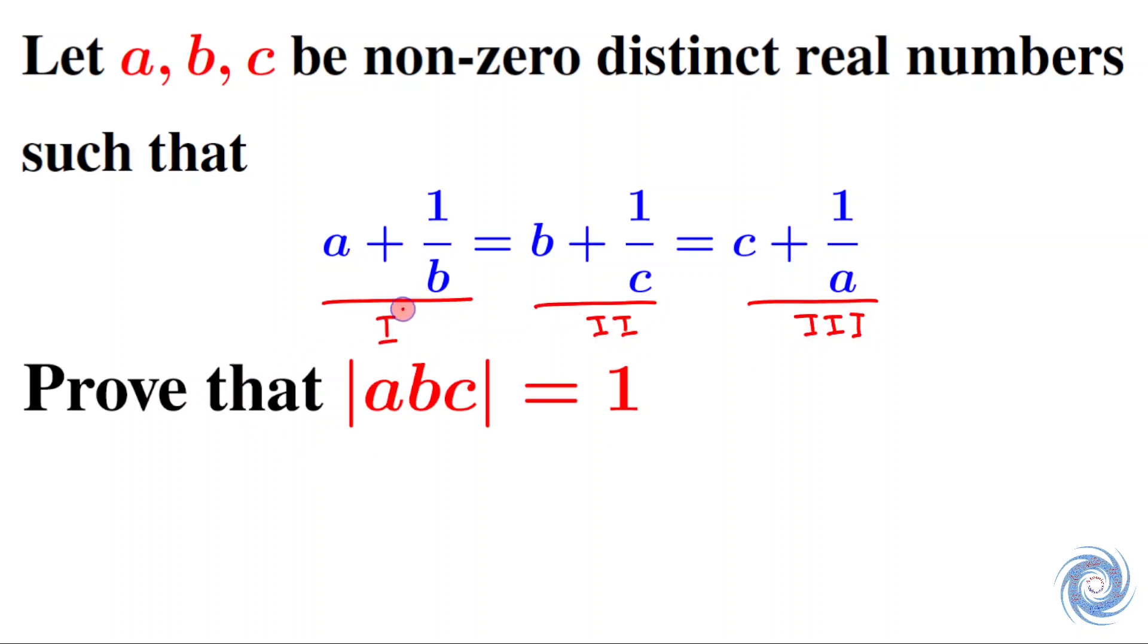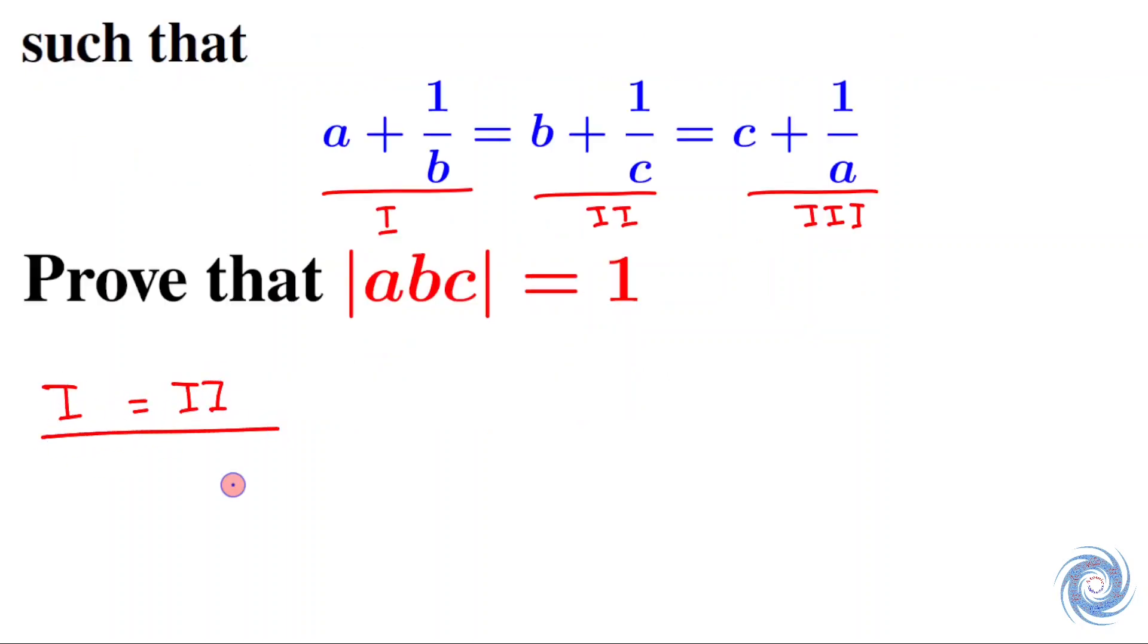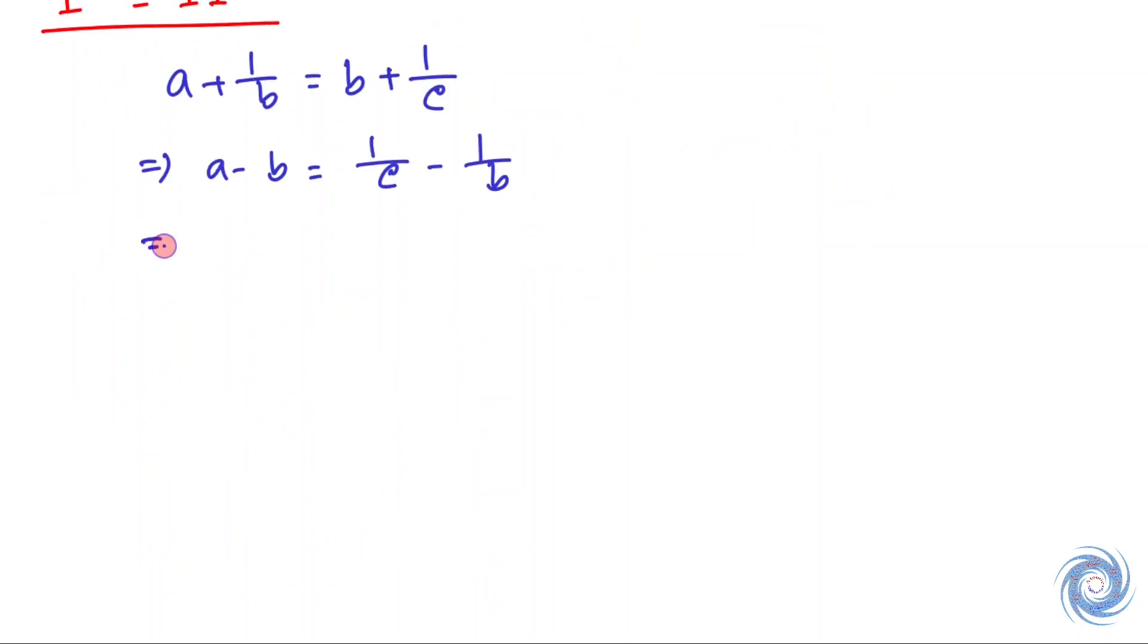Now by equating Expression I equals Expression II, we have a plus 1 over b equals b plus 1 over c. This implies a minus b equals 1 over c minus 1 over b, so a minus b equals b minus c over bc. Let us take this as Equation IV.